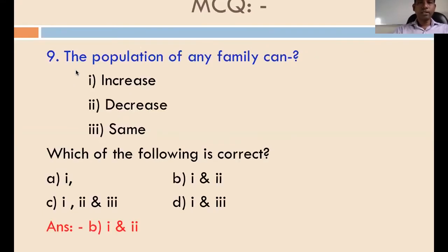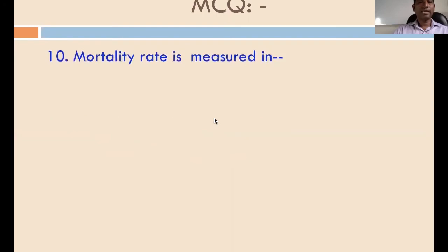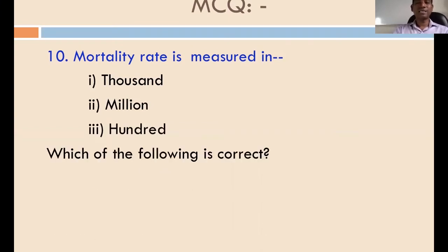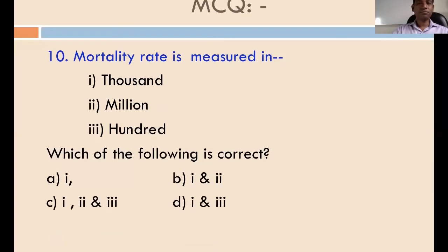Question number nine: the population of any family can increase, decrease, or remain the same. The answer is B — both increase and decrease can happen. Last question, number ten: mortality rate is measured in what unit — thousand, million, or hundred? The answer is A — we measure mortality rate per thousand. Thank you very much.